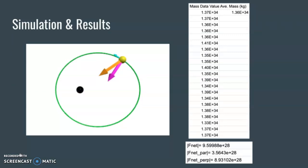This was the result after running the computer simulation. As you can see, the planet has a unique orbit around the black hole. The orange arrow represents the change in net force, the purple arrow represents the net force perpendicular, and the blue arrow represents the net force parallel.